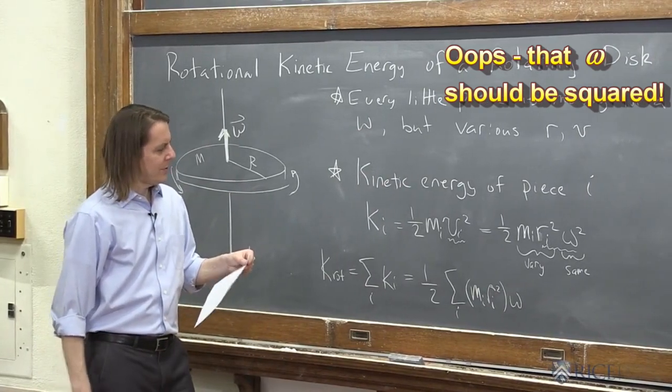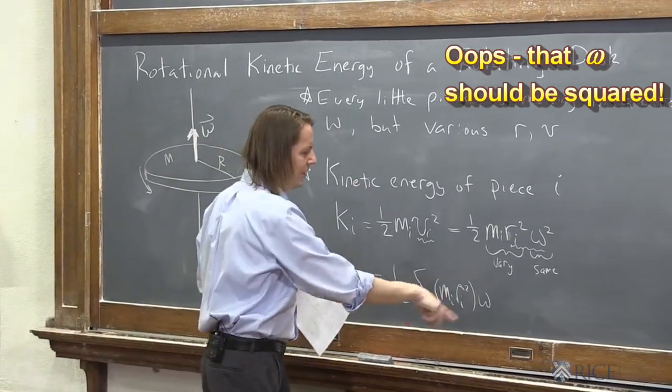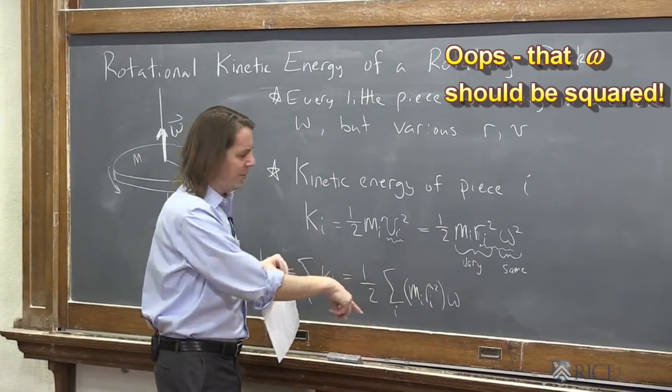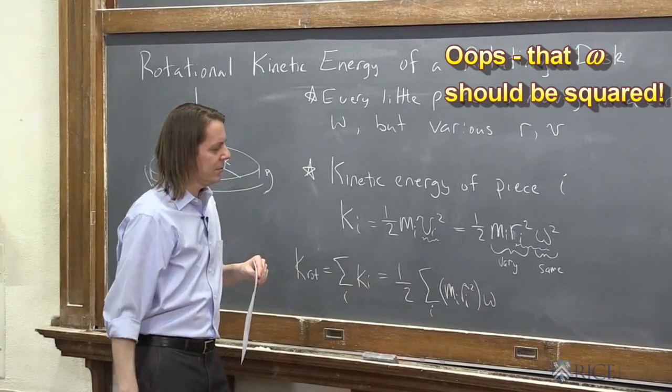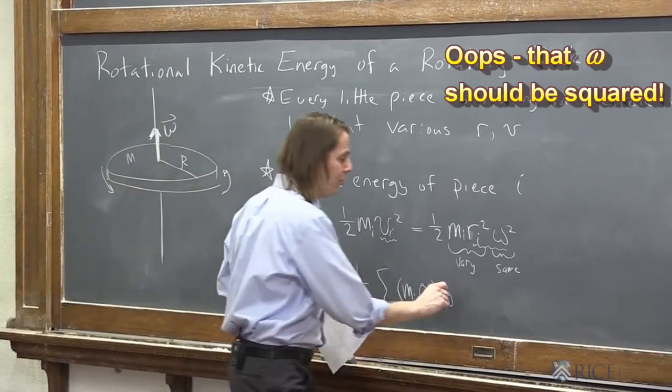Well, if you look at that, then you could say the half is constant, omega is constant. What is this thing? What is this sum over i of all the m_i r_i squareds? This is a new quantity.